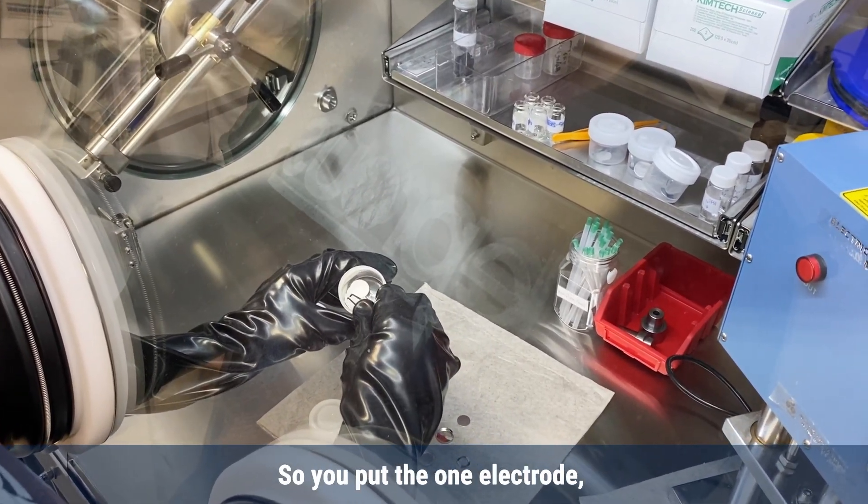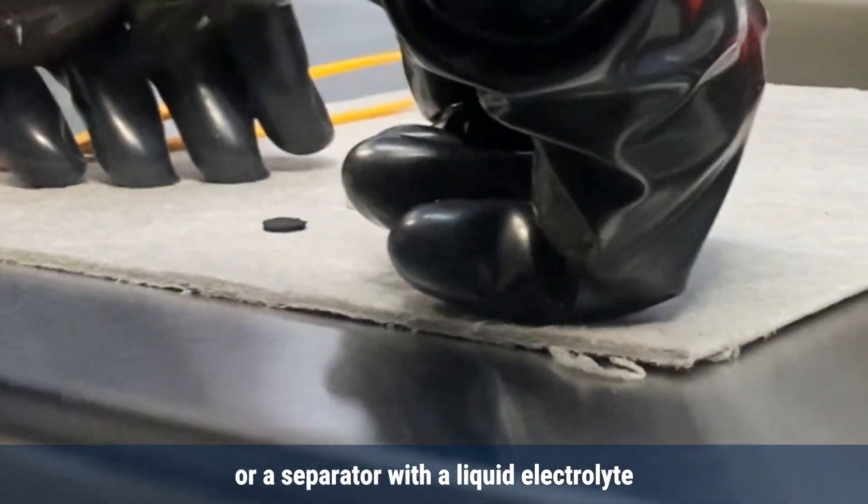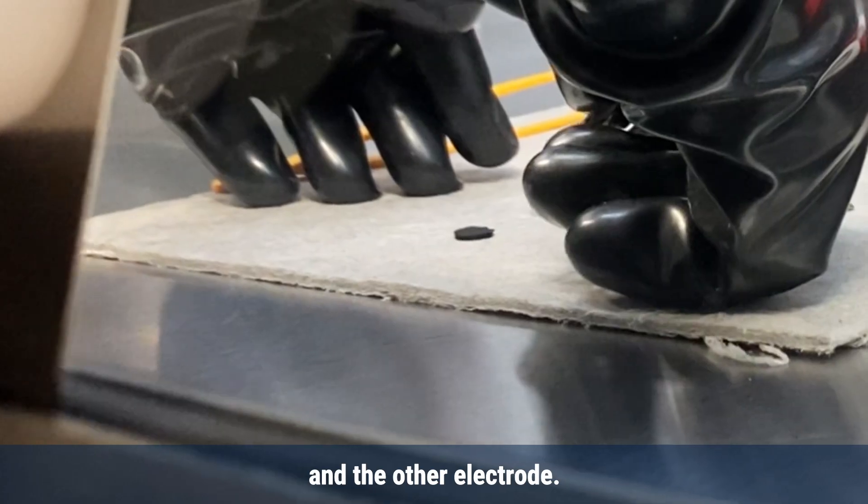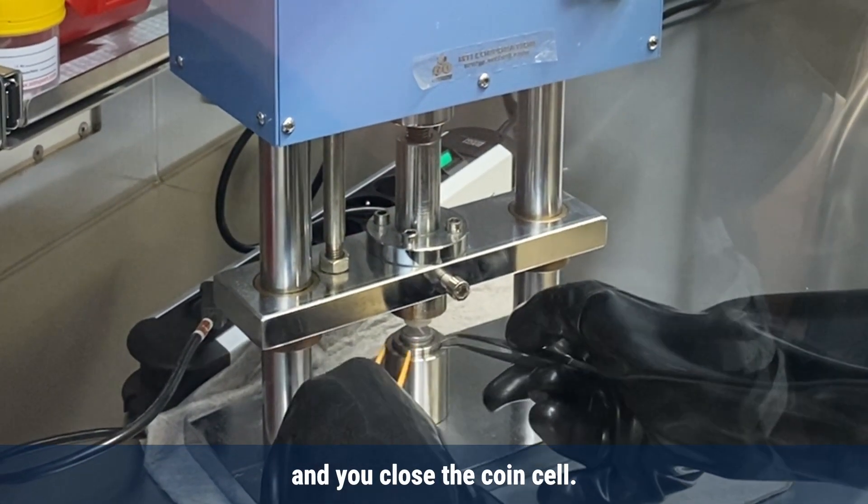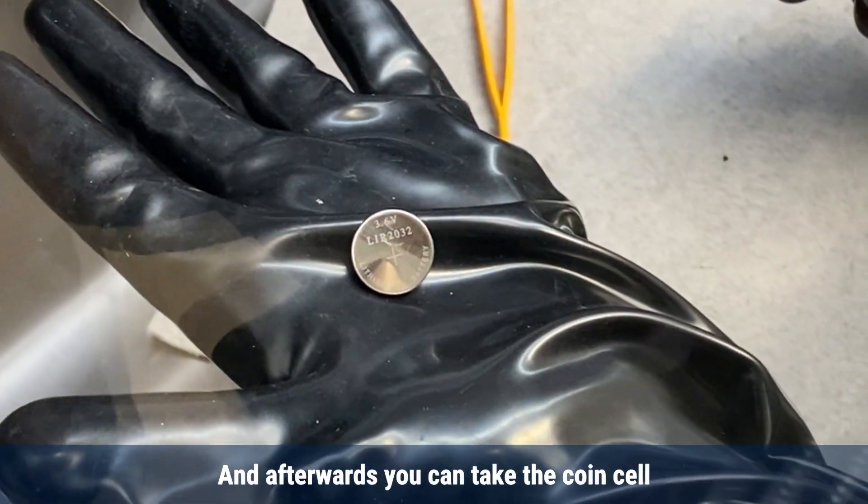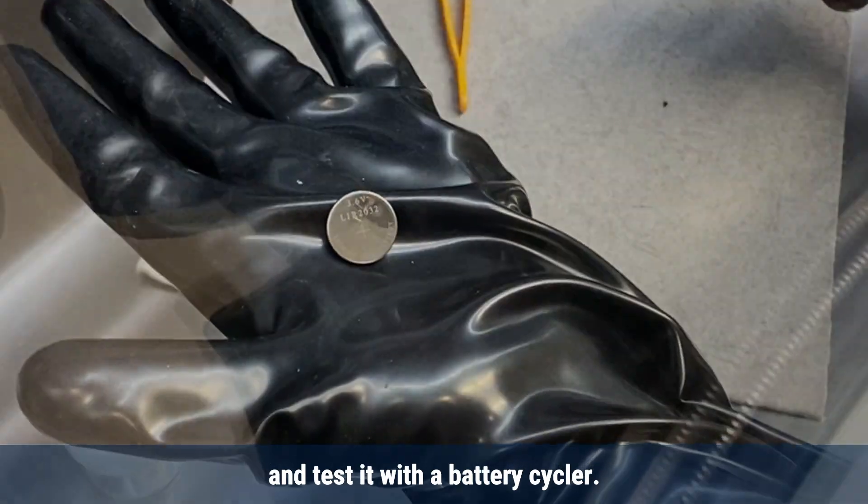You put the one electrode, then the polymer electrolyte or a separator with a liquid electrolyte, and the other electrode. Then you close it and put it in the crimper to close the coin cell. Afterwards, you can take the coin cell that was prepared like that and test it with a battery cycler.